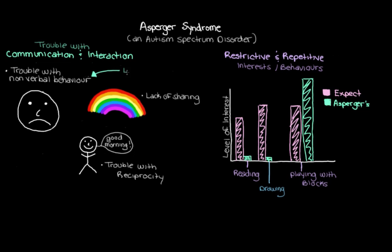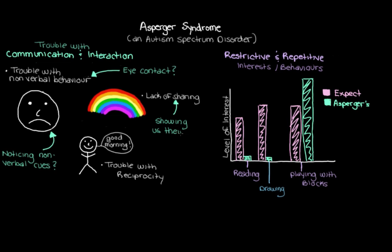We might watch to see if they're making eye contact or using nonverbal cues. We'd look to see if they're picking up on body language changes or changes in tone of voice from others. We might play with them to see if they want to show us toys they like or share something. We might ask them or their parents about their interests to see if they seem restrictive, like on our graph. These sorts of questions and observations help us look for signs of Asperger's.